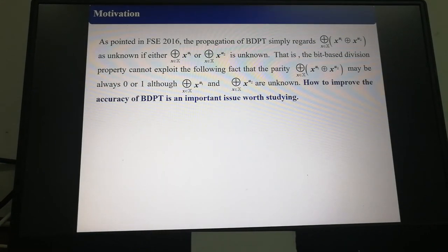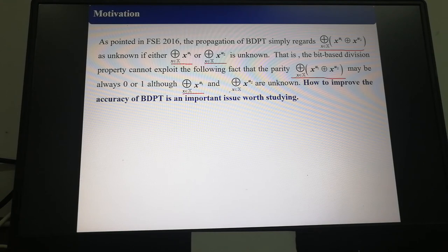As pointed in FSE 2016, the propagation of BDPT simply regards this as unknown if either this or this is unknown. That is, the bit-based division property cannot explore the following facts that the parity may be always 0 or 1, although this and this are unknown. How to improve accuracy of BDPT is an important issue worth studying.